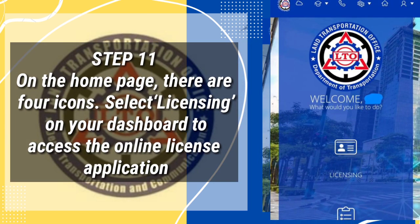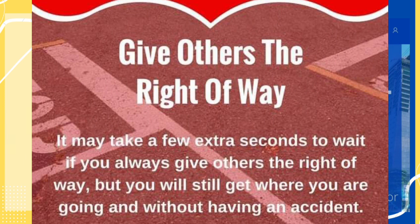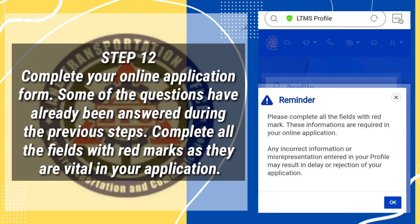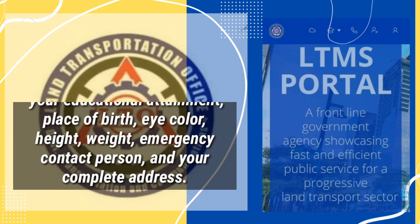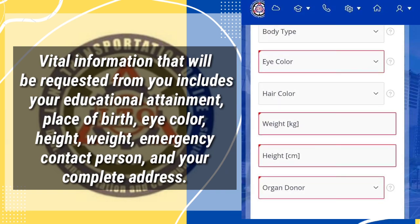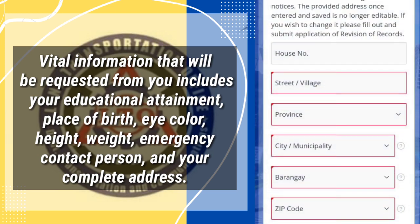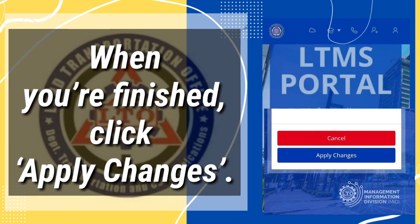Step 11: On the homepage, there are 4 icons. Select Licensing on your dashboard to access the online license application. Some of the questions have already been answered during the previous steps. Complete all fields with red marks as they are vital in your application. Vital information requested includes your educational attainment, place of birth, eye color, height, weight, emergency contact person, and your complete address. When you're finished, click Apply Changes.